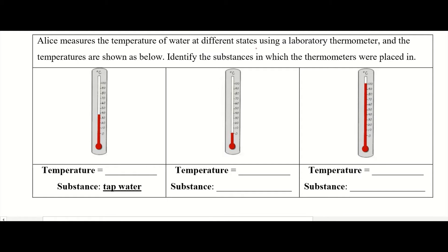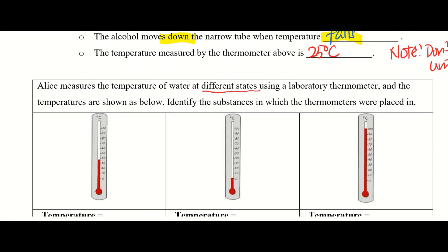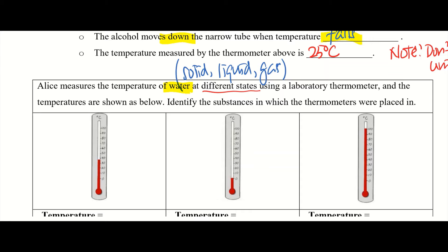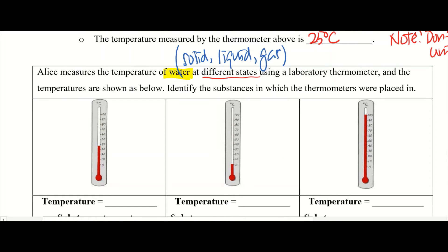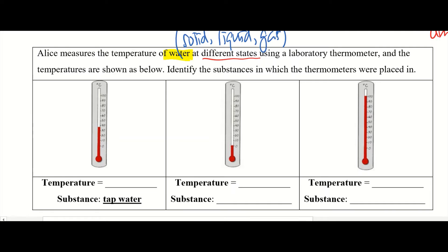Next, we measure the temperature of water at different states. Different states means: is it solid, liquid, or gas? Using a lab thermometer — solid water is ice, water in liquid state is just the water that we drink, and water in gas state is water vapor or steam. The question asks us to look at the temperature reading and determine whether it's ice, liquid water, or water vapor/steam.